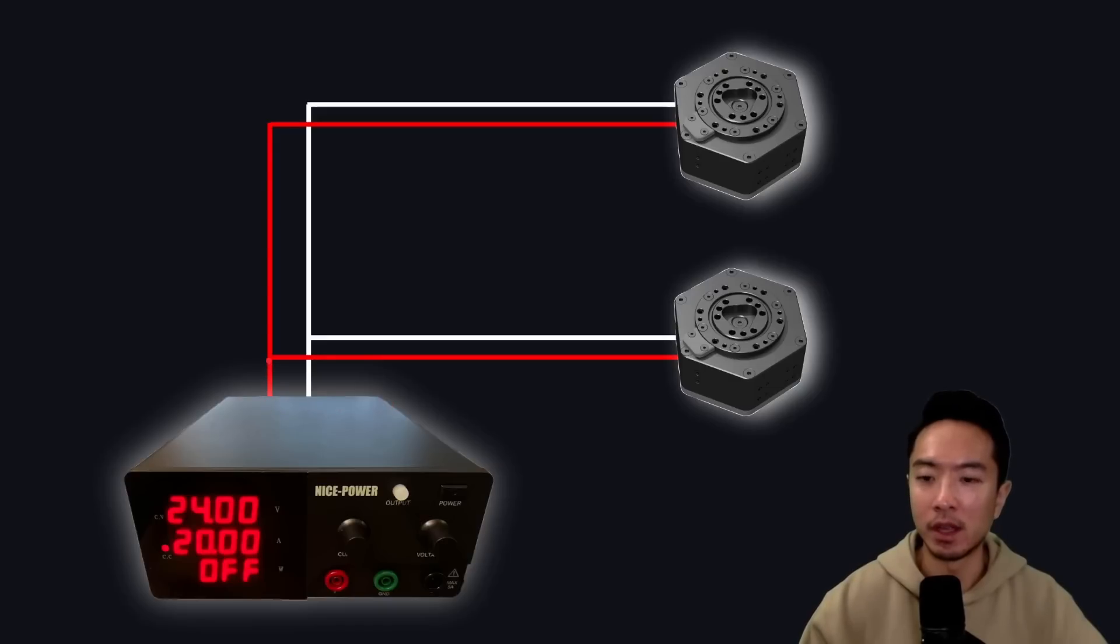What this means is you want the plus or the red line to go to both motors, and you want the minus or the white line to also go to both motors. So here is just a schematic, but what parts do you actually need to make this physical connection?